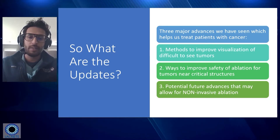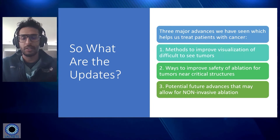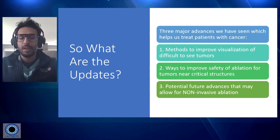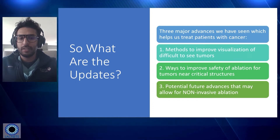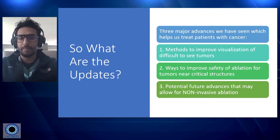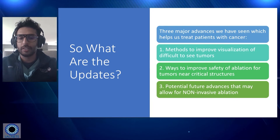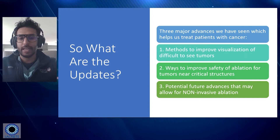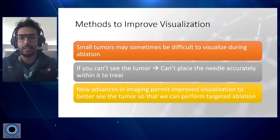So let's focus on what are the updates with interventional oncology and neuroendocrine cancer. There are really three major advancements I want to touch on today. One is methods to improve visualization of difficult-to-see tumors — if we can't see the tumor, we can't treat it. Second, ways to improve safety of ablation for tumors near critical structures. And third, potential future advances that may allow for non-invasive ablation.